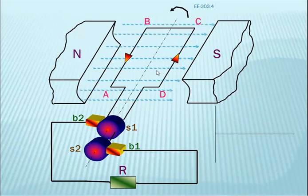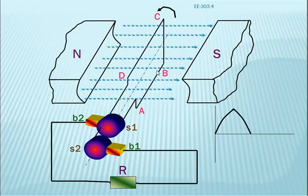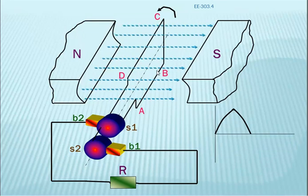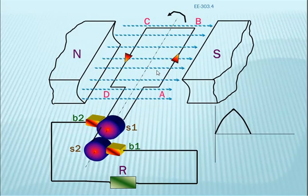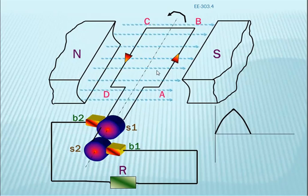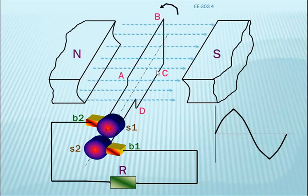At 0 degrees, EMF generation is zero. As rotation starts, the current energy increases. At 90 degrees, the EMF is maximum. At 180 degrees, the EMF returns. At 270 degrees, we get one of the reverse fluxes — this forms one cycle from 0 to 90, 180, 270, and 360 degrees.